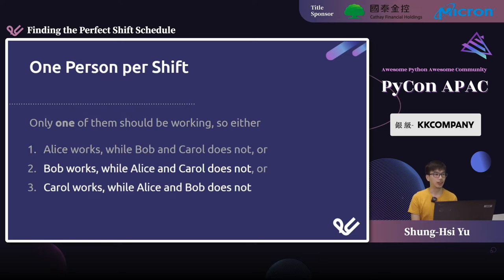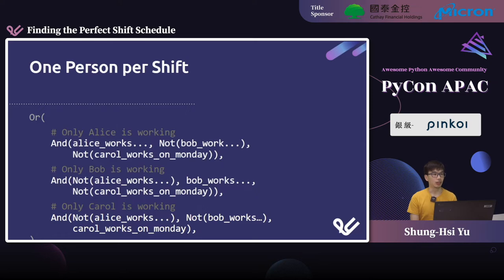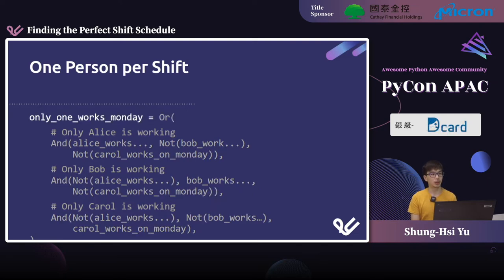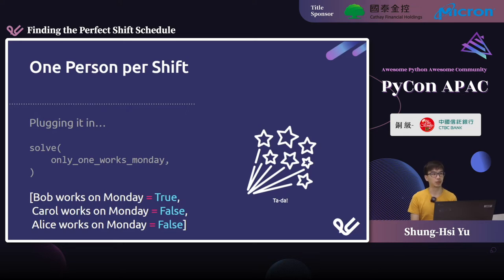For the second and third cases, you set Bob or Carol to true respectively. Since the cases are joined by OR, we wrap them with OR. So the first argument is Alice working, second is Bob working, third is Carol working — and with OR, one of these three must be true. We call this rule 'only one works Monday', then call solve with this rule. The solver returns a result — in this case, Bob is working on Monday. That's our first solution to our first scheduling problem.